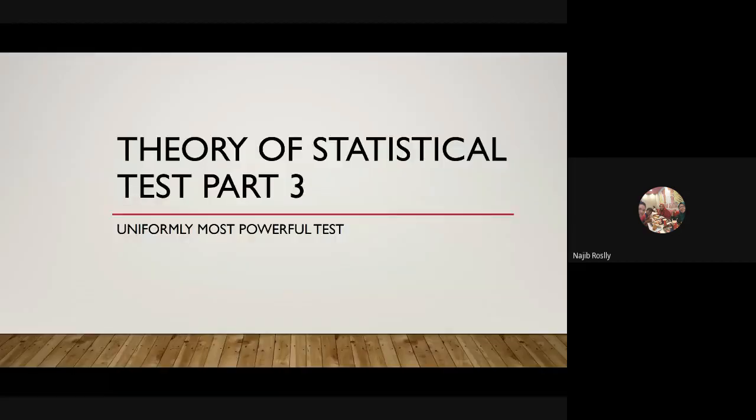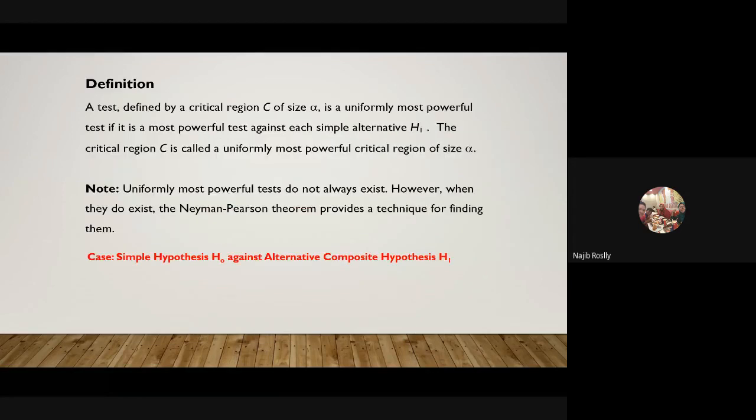On statistical testing, this is on uniformly most powerful tests. This is our last class. We already mentioned two examples in uniformly most powerful tests. The purpose of the uniformly most powerful test is to find the best critical region.